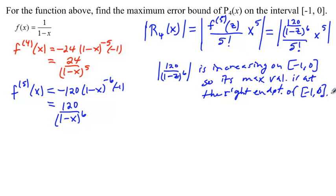Okay, that means that the absolute value of 120 over 1 minus z to the sixth is less than or equal to, at the right end point, that would be at 0, you're going to get 1 on the bottom. So, you end up with less than or equal to 120.